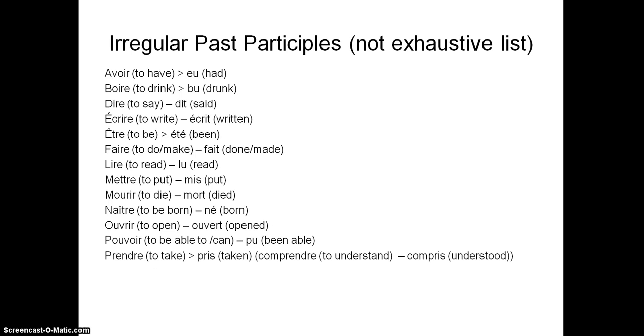Prendre goes to pris. It might be worth noting at this point that if you have any composite verbs, so if you have, for example, comprendre has the word prendre in it, it still forms in the same way as this irregular bit here. So comprendre, can you see that you've got pris here as you would do for prendre. And that goes with any of these verbs that are irregular. Recevoir goes to reçu. Savoir goes to su. Venir goes to venu. Voir goes to vu.